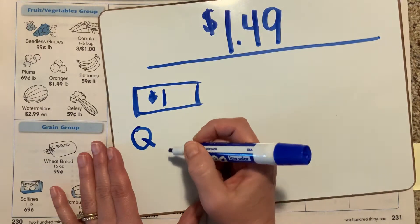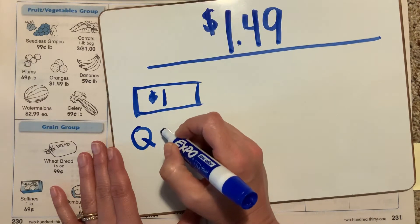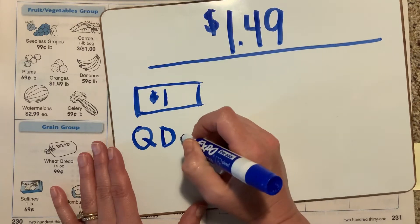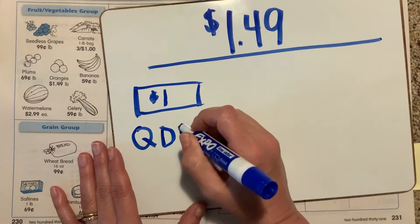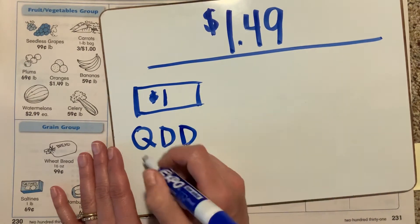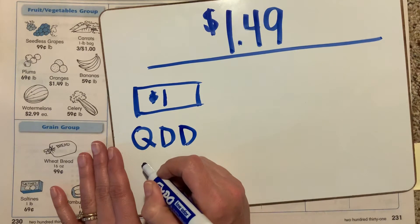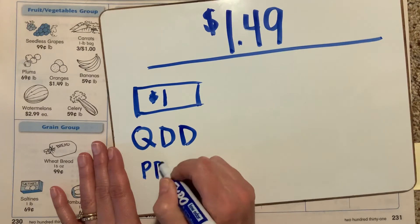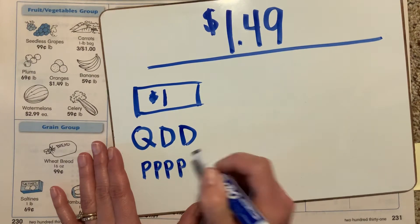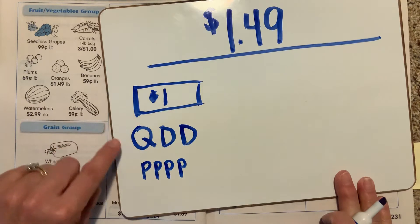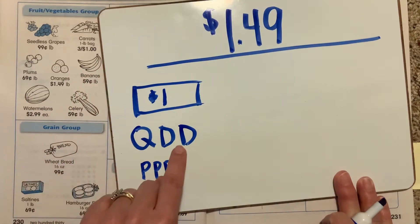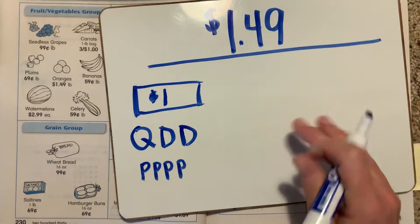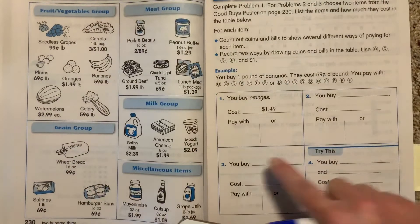Adding coins to the dollar bill: $1.25, $1.35, $1.45, $1.46, $1.47, $1.48, $1.49. So counting it all: $1.00, $1.25, $1.35, $1.45, $1.46, $1.47, $1.48, $1.49. That's one way to pay for the oranges.